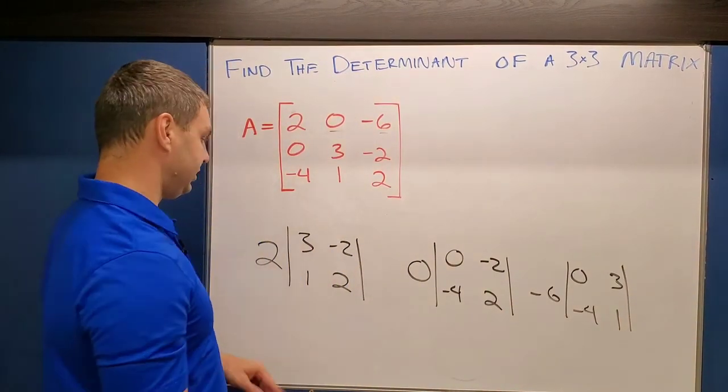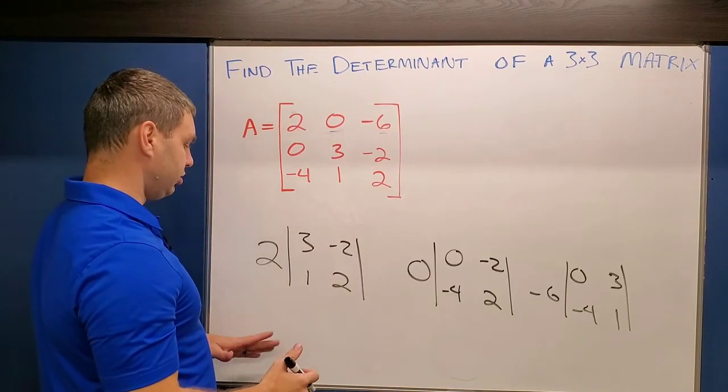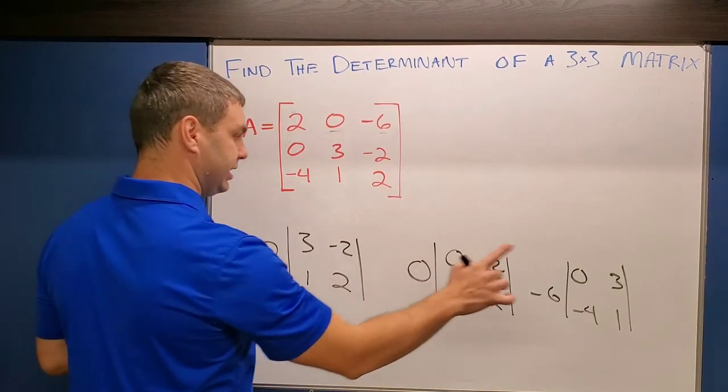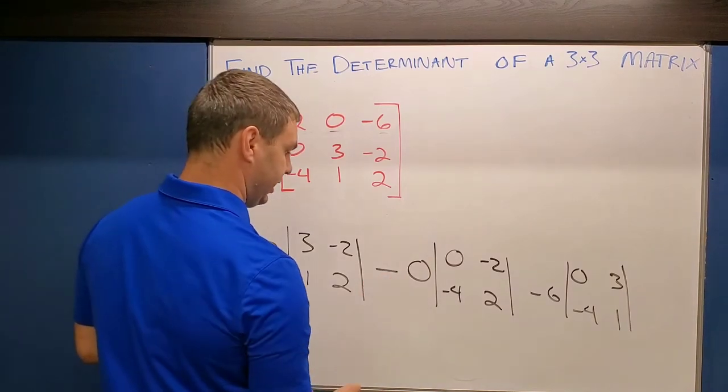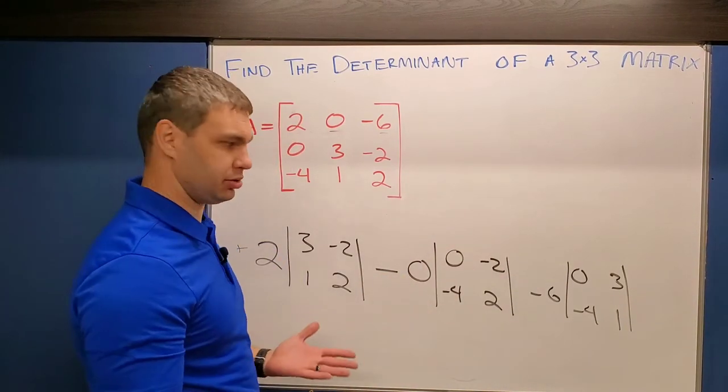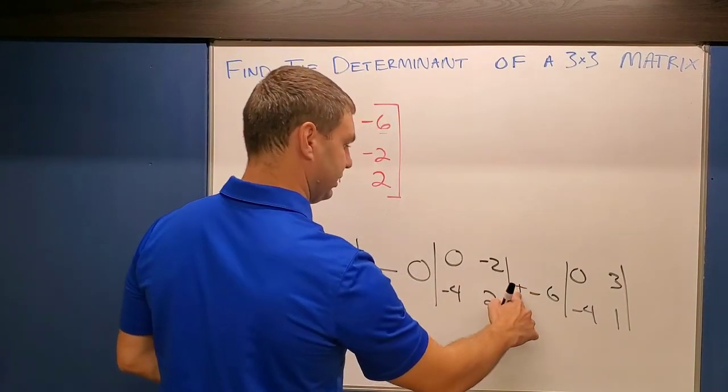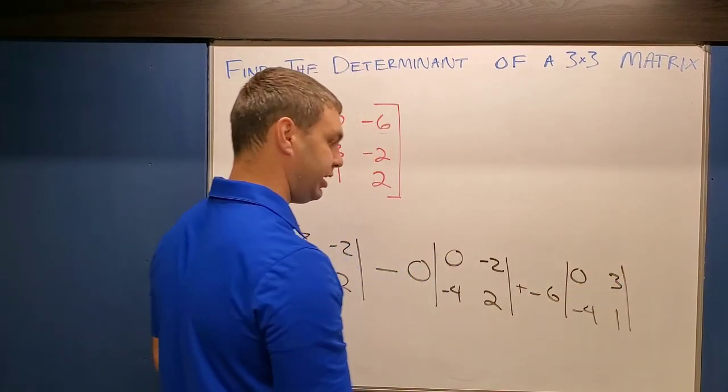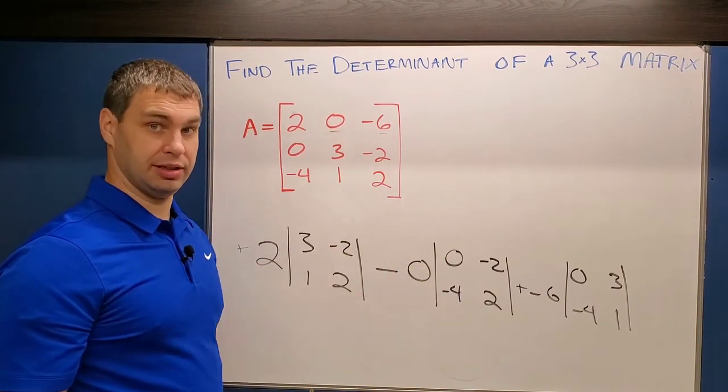Now, one quick thing to mention is that I don't have any signs in between these. I need signs. And so to do this, we're going to go positive, negative, positive. So it's going to be a positive two, a negative zero. There's no such thing as negative zero, but negative this term. And then this will be a positive. So plus negative six times. And it's always going to go positive, negative, positive when you do a three by three determinant.